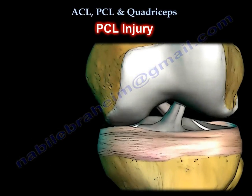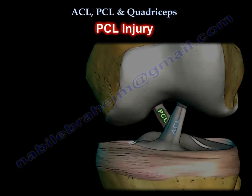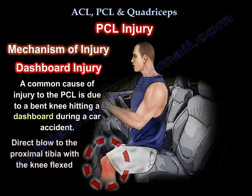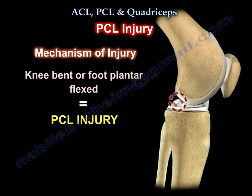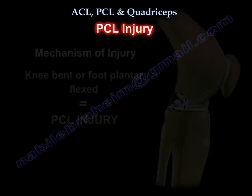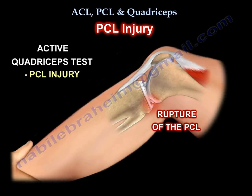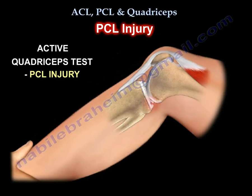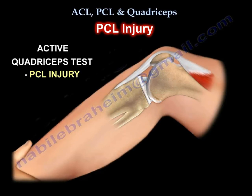How about the PCL? The PCL is usually injured with the knee bent — a direct blow to the proximal tibia with the knee flexed, such as a dashboard injury, or a non-contact hyperflexion of the knee with the foot in plantar flexion. When the knee is bent, the tibia is subluxed posteriorly. If the patient is asked to contract the quadriceps muscle with the leg stabilized, the tibia will be seen reducing from the posterior subluxed position. This is a test to diagnose PCL injury, called the active quadriceps test.